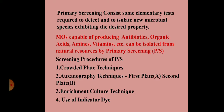Primary screening consists of certain elementary tests that are required to isolate a new microorganism having desirable properties and industrial importance. Microorganisms capable of producing organic acids, antibiotics, amines, vitamins, etc. are isolated from natural resources by primary screening.